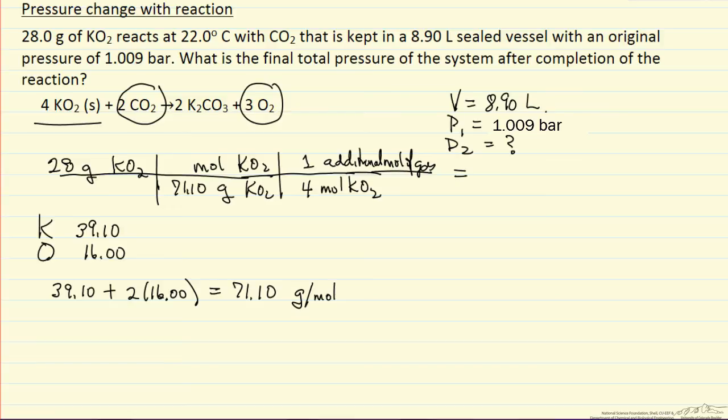This number will give us the number of moles of additional gas. We should be able to use the ideal gas law to determine the pressure. Calculate the moles of additional gas, and the question is what additional pressure will that cause? We can think of that gas being in the container by itself. What additional pressure would it exert? That's the pressure we add on to our original pressure.